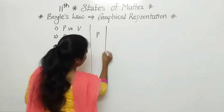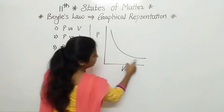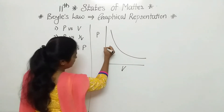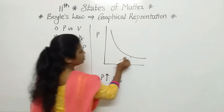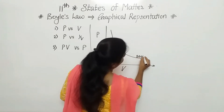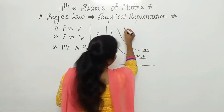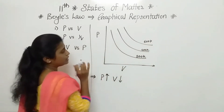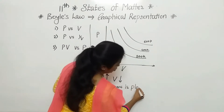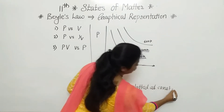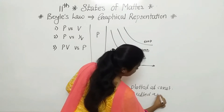When we are plotting the pressure versus volume graph, we get a curve. From this curve we can observe that as pressure increases, volume decreases. This is the first conclusion. This graph is plotted at 200 Kelvin, the second curve at 400 Kelvin, and the third curve at 600 Kelvin. Each curve is plotted at constant temperature, so it is called an isotherm.